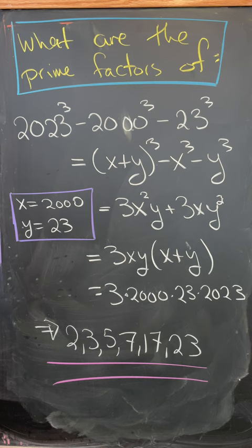So the trick is to set x equal to 2000 and y equal to 23, and then we'll see that this is x plus y cubed minus x cubed minus y cubed.